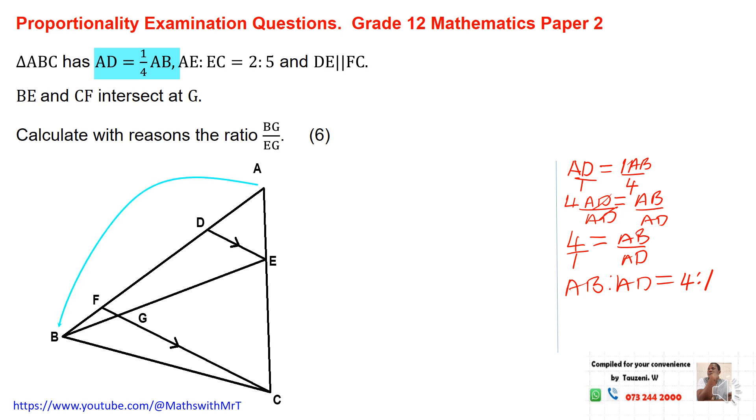Putting that into the diagram, that is my AB, and that is my AD. AB is 4, AD is 1. And from these two, we can therefore conclude that DB is equal to 3 units. So that DB, which is 3 units, plus AD, which is 1 unit, will give us AB, which is 4 units.